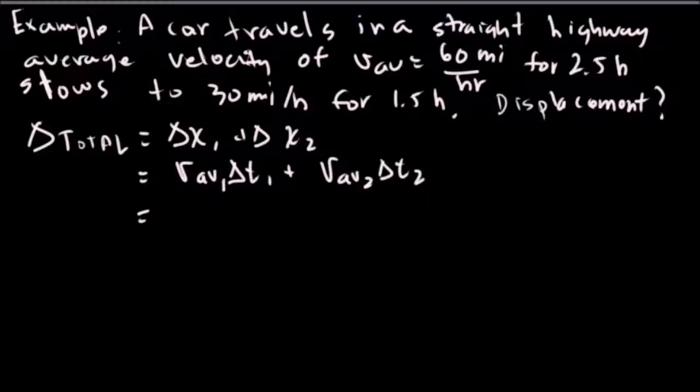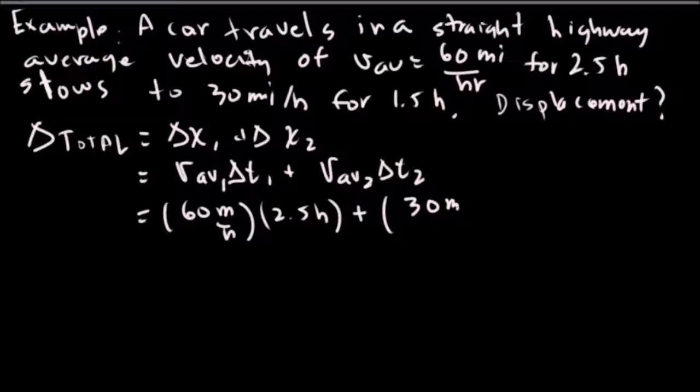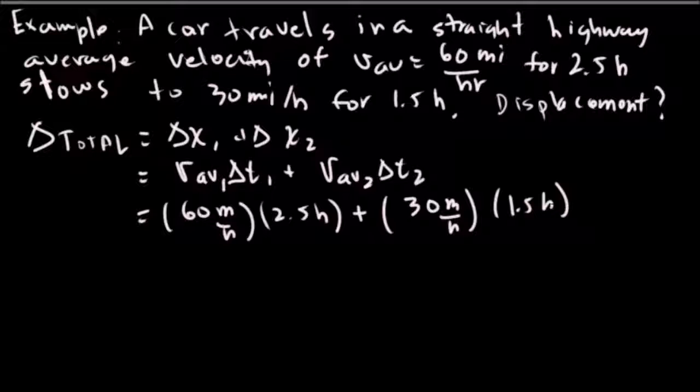So we just insert our numbers here. We've got 60 miles per hour and then we traveled for 2.5 hours, plus we went at a velocity of 30 miles per hour for 1.5 hours. So breaking that down, 60 times 2.5 is 150 miles. Second part of the journey, 30 times 1.5 is going to be 45 miles, which is a grand total of 195 miles. So the car traveled in that period of time 195 miles.